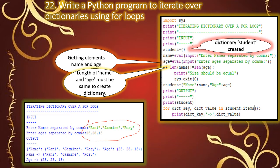One by one, the NAME key displays values Ronnie, Jasmine, Rosie, and the AGE key displays values 25, 28, 15.